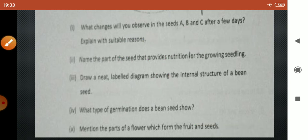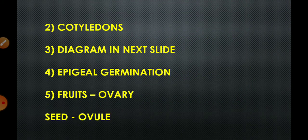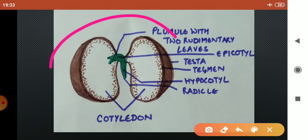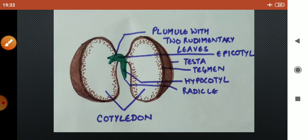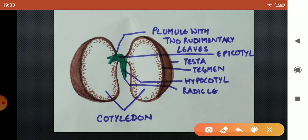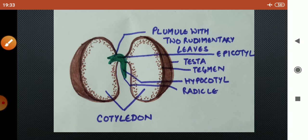The third one is draw a neat and label diagram showing the internal structure of a bean seed. This is a dicot seed, a bean seed structure. These are the two cotyledons. This is the plumule region with rudimentary leaves and this is the radical region. The distance from the axis with the plumule is called as epicotyle whereas with the radical it is called as hypocotyle. The outermost covering is called as testa whereas the second covering is called as tegmin.